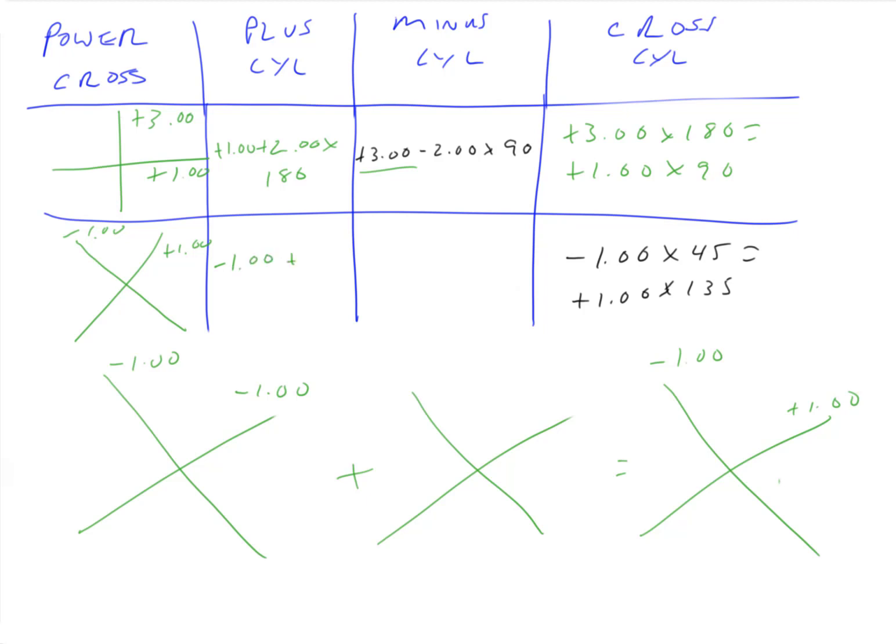We're going to add to it. So what do we add to minus one to get minus one? Zero. Plano. What do we add to minus one to get plus one? Plus two. And plus two axis what? Axis 135. Plus two axis 135.